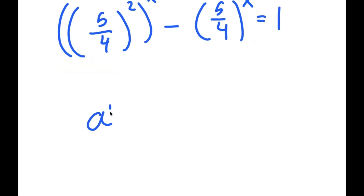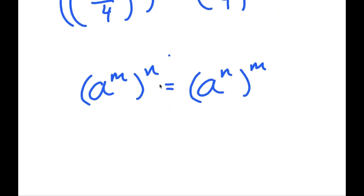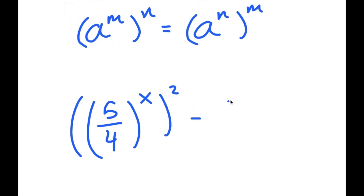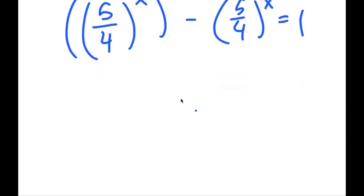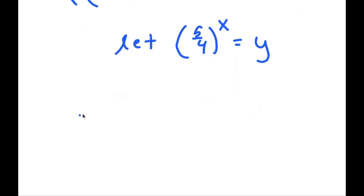From here, 5 squared over 4 squared is the same thing as (5/4) squared. And if I have something in the form a to the power of m to the power of n, this is equal to a to the power of n to the power of m. So (5/4)^2 to the power of x turns into (5/4)^x to the power of 2. From here, I'm going to let (5/4)^x equal to the variable y.